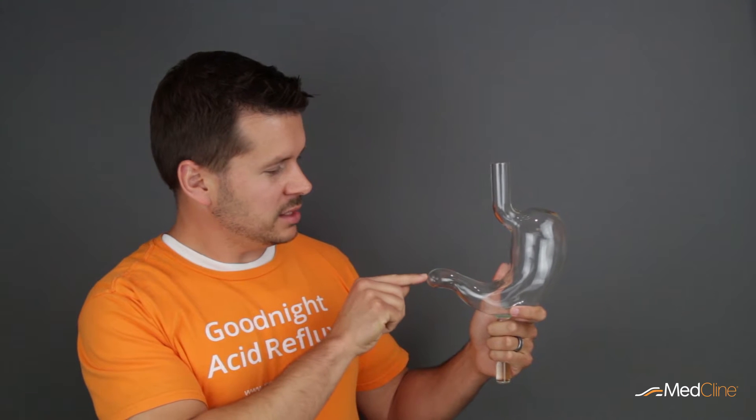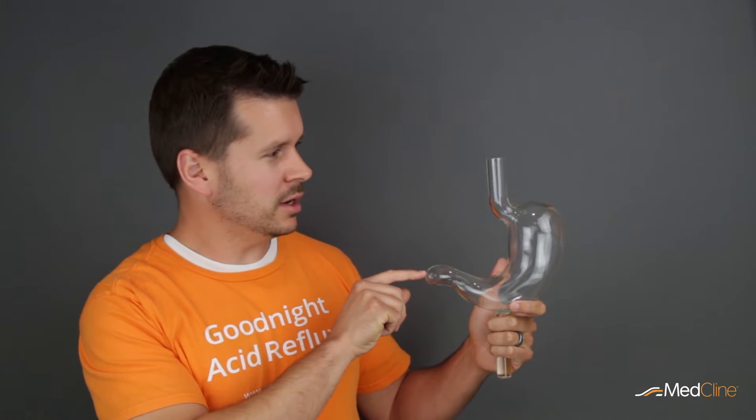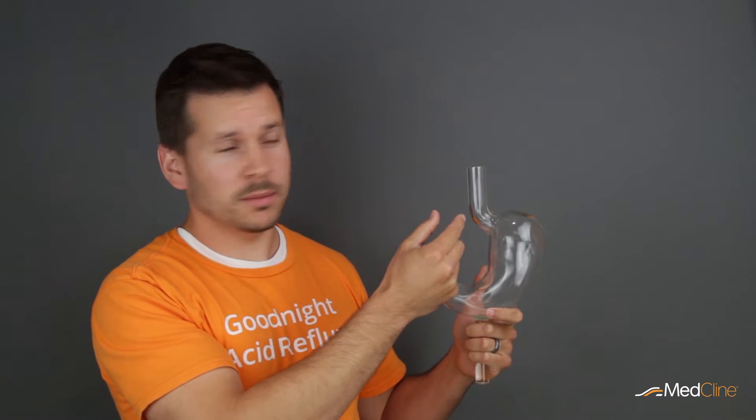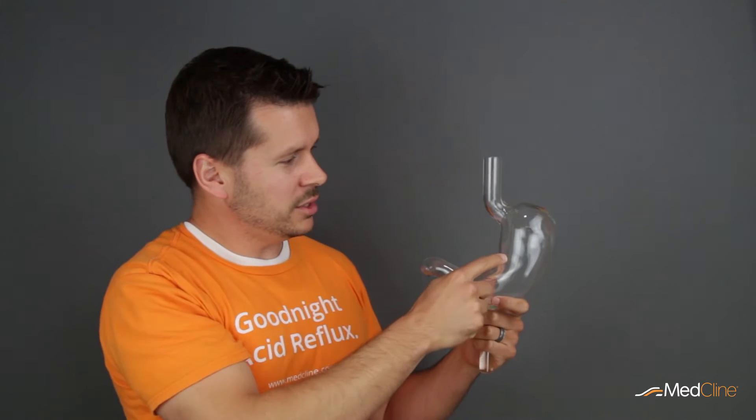We have here a model of the stomach. Your stomach has an exit valve here called the pyloric sphincter, and this tube here represents your esophagus, or the tube that brings food from your mouth down into your stomach.